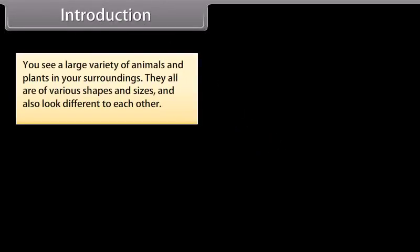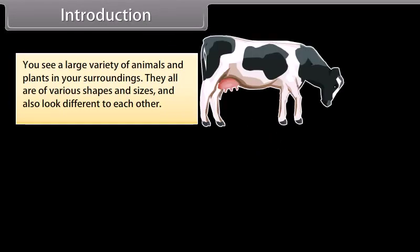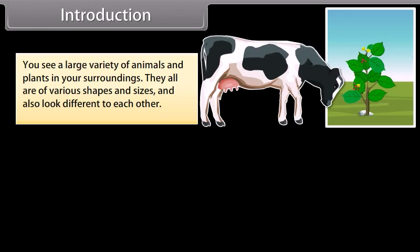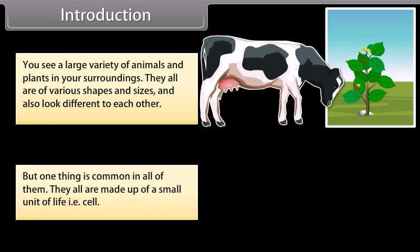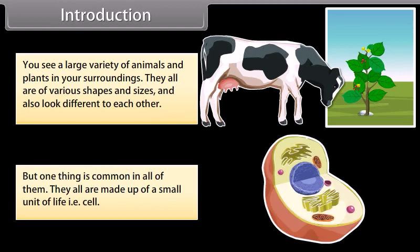You see a large variety of animals and plants in your surroundings. They all are of various shapes and sizes and also look different to each other. But one thing is common in all of them — they all are made up of a small unit of life, that is, the cell. In this module we are going to learn about the cell and its structure.